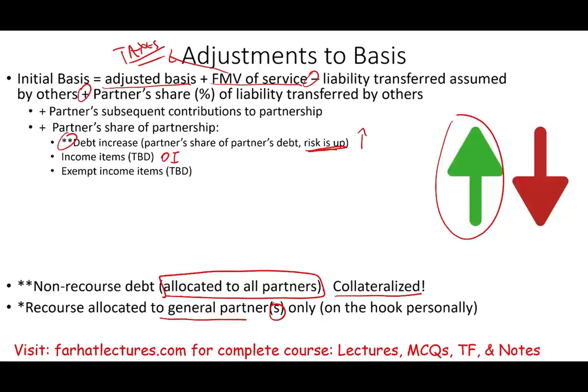Exempt income items — such as municipal bond interest — will also increase your basis, even though they are not taxable. Because they represent real economic income, they still increase your basis.